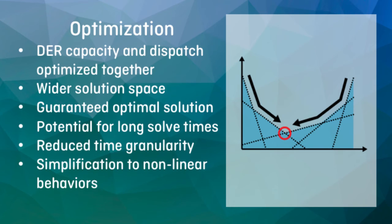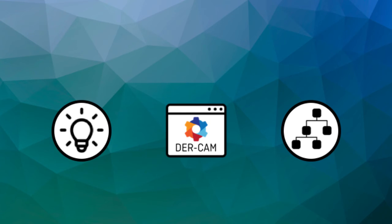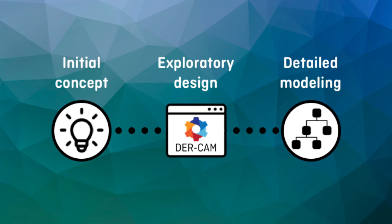The second key simplification is linearization. DerCam is a mixed integer linear model, meaning all constraints must be captured in a linear fashion. Some DER technologies exhibit nonlinear behaviors in the real world, and so these must be simplified to be included in DerCam. Because of their relative strengths and weaknesses, many microgrid design workflows will in fact incorporate both an open-ended optimization approach to explore and understand early-stage feasibility, and more detail-oriented simulation exercises later in the process to vet and refine system designs. In this regard, DerCam can be seen as complementary to other simulation-based software tools in this space.